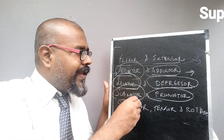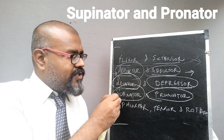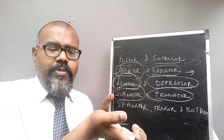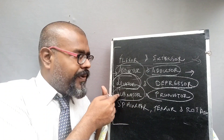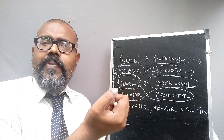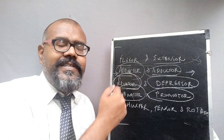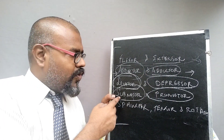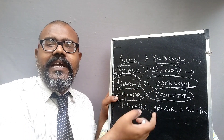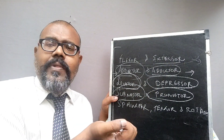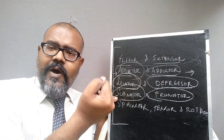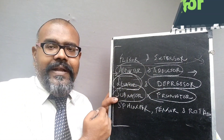The next type is supinator and pronator, especially in the palm region. The supinator action is when you move the palm upward. The pronator action is when you move the palm downward. So if you want to move the palm up, that is the supinator; if you want to move the palm down, that muscle is called the pronator.